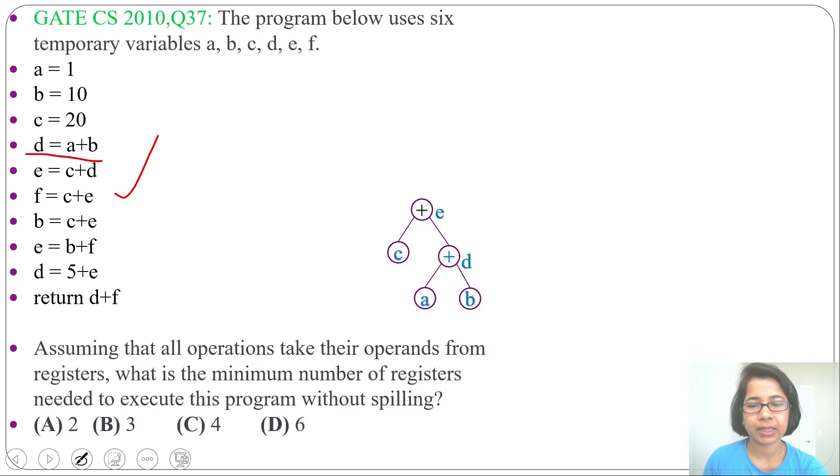Next we will do for C plus E. C is there, E is there. We will create another node for plus. Left child will be C, E will be its right child. And this node will do for F also for B. You can mark F is for C plus E, B is for C plus E. So C plus E is for F also for B. Next B plus F, this same node is for B also for F. So we will create another node plus. Its left child will be this plus its right child will be also same node. And this node is for E.